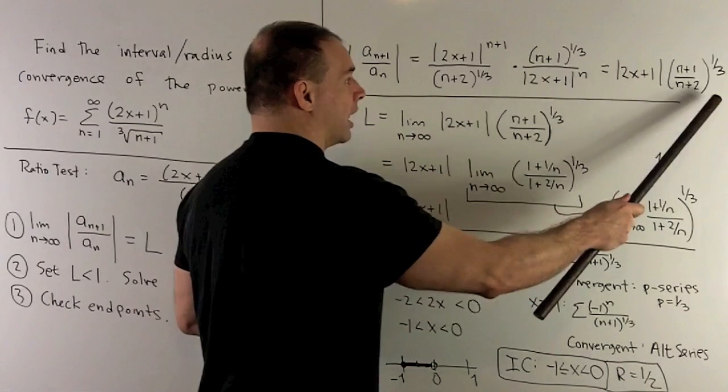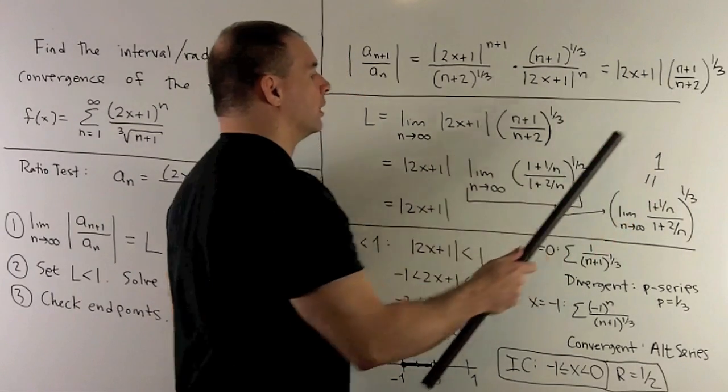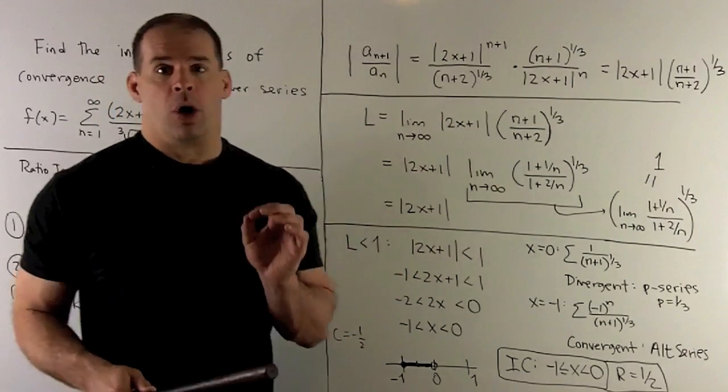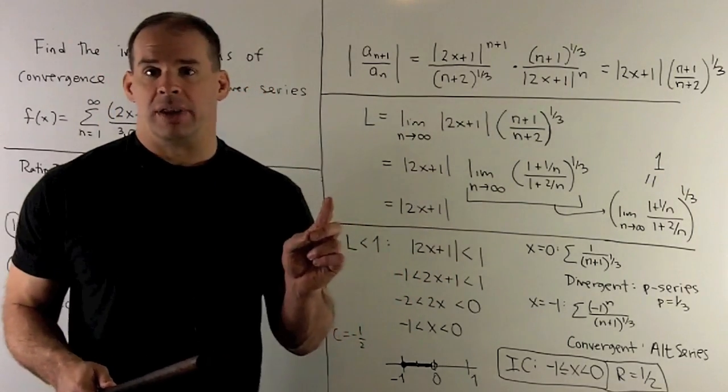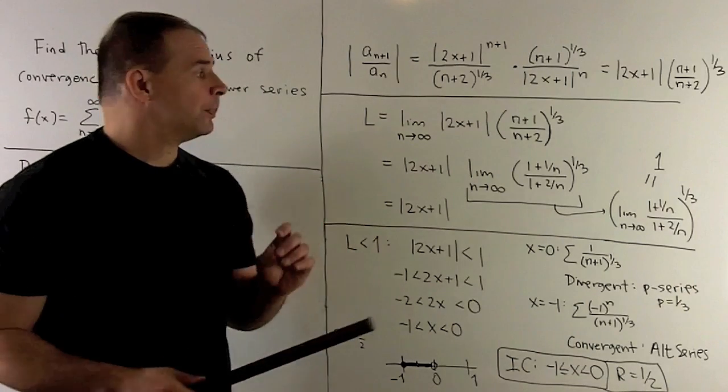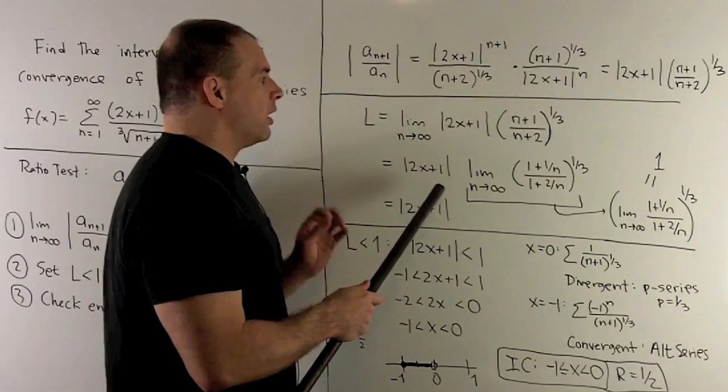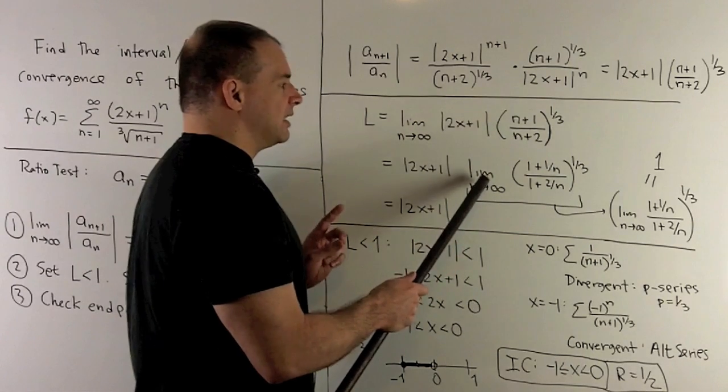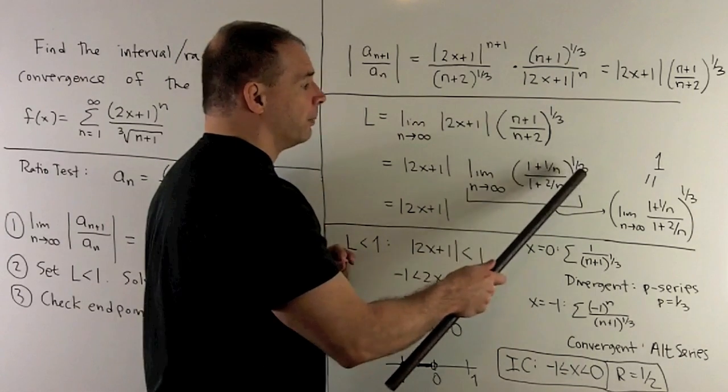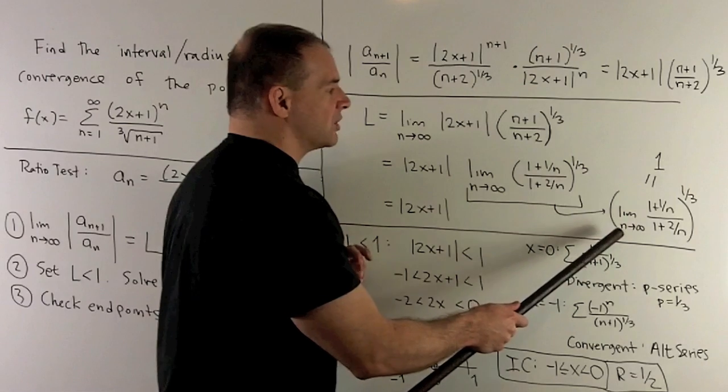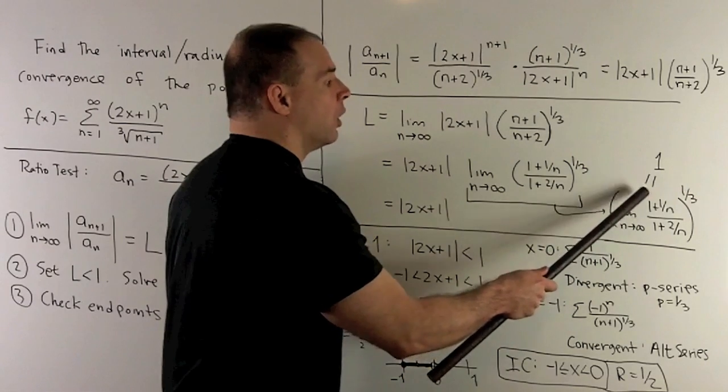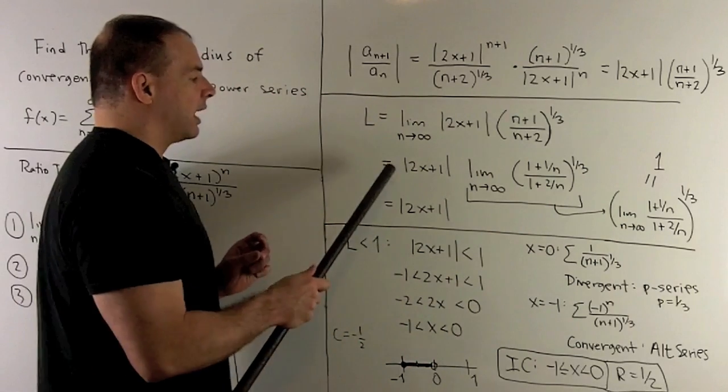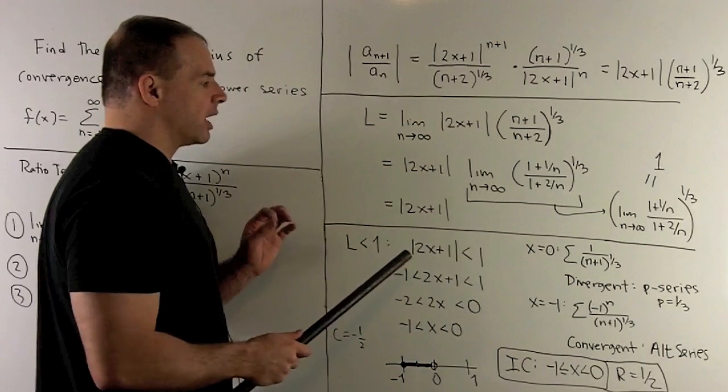Then we want to take the limit as n goes to infinity. When we do that, first, |2x+1| has no n terms, so we can pull that out. On the inside, I'm going to divide numerator and denominator by n, and we can push the limit to the inside of the 1/3. This limit is going to go to 1 over 1, which means it's going to go to 1. So our limit's going to be |2x+1|.